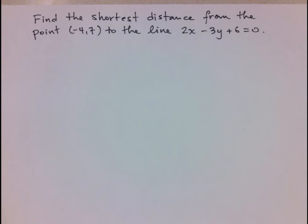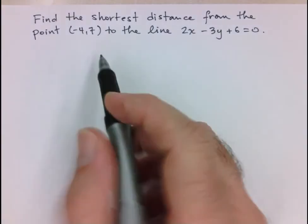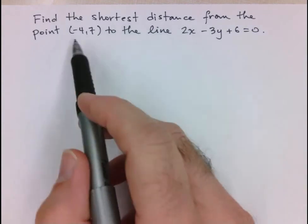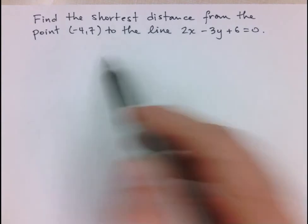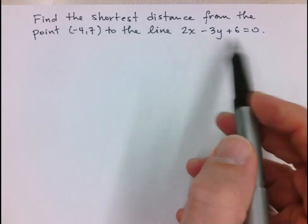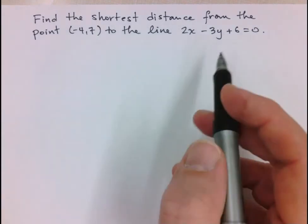Hi folks, we're going to take a look at one of the most common analytic geometry problems in 2D, which is finding the distance between a point and a line. When we talk about the distance between a point and a line, we assume that it's the shortest distance, and that's what's specified here in the problem. Find the shortest distance from the point at negative 4, 7 to the line 2x minus 3y plus 6 equals 0.